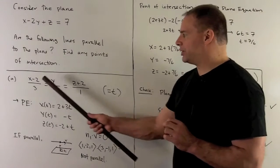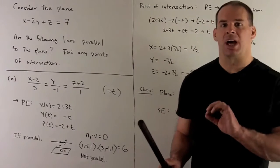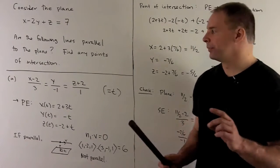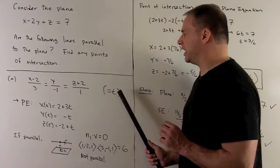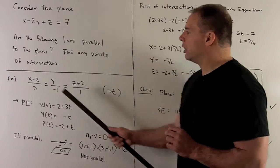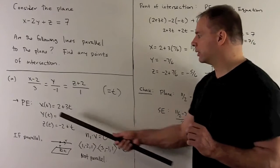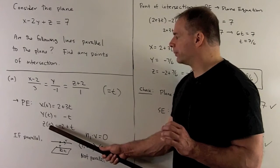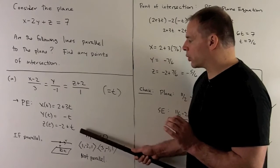We'll set each of these terms equal to t and then just unwind, solving for x, y, and z. For instance, if we have (x minus 2) over 3 equal to t, push the 3 over to get 3t, then move the 2 over to get x equals 2 plus 3t. We do that for y and z to get our parametric equations.